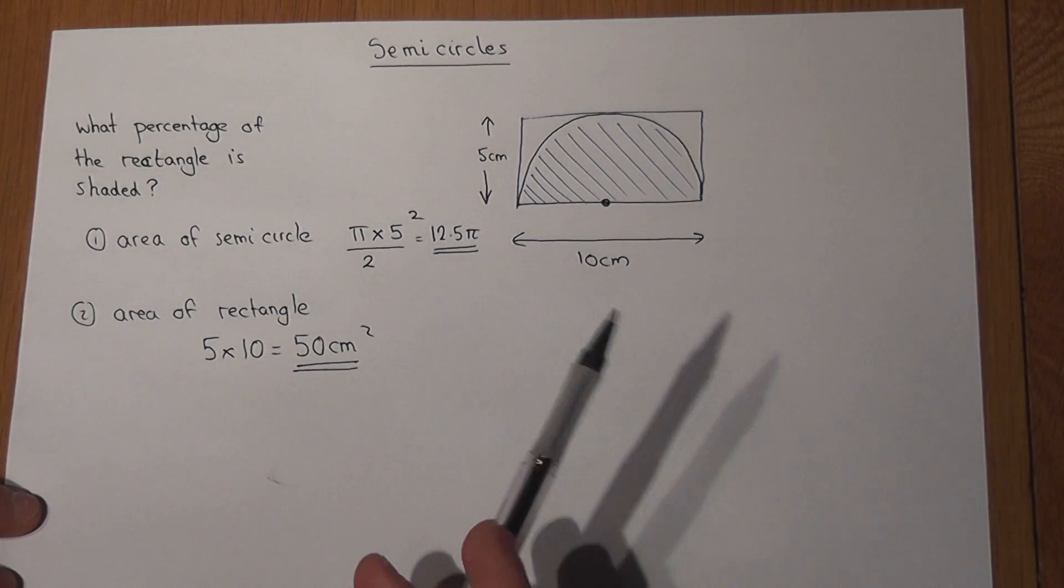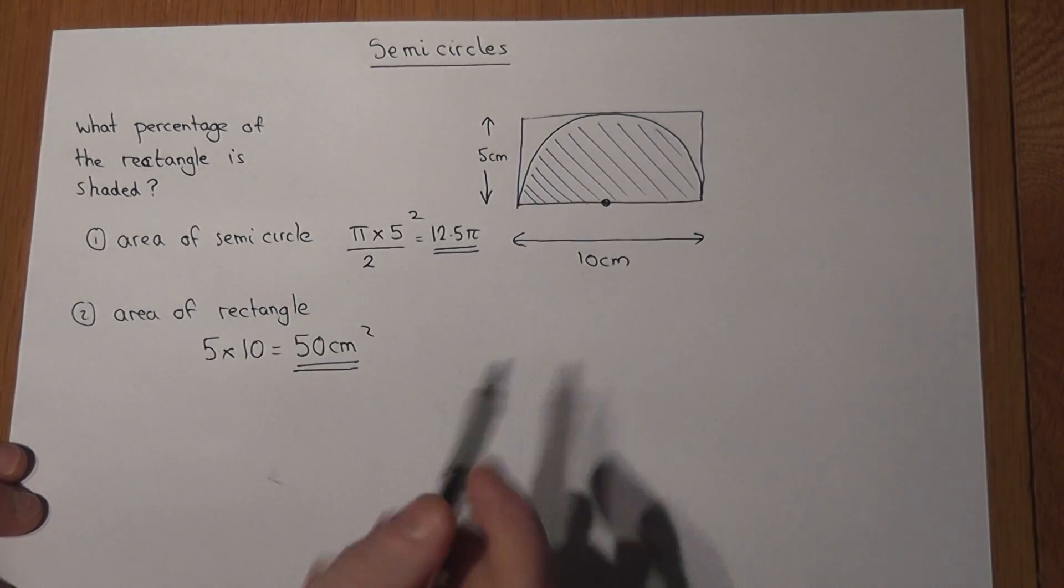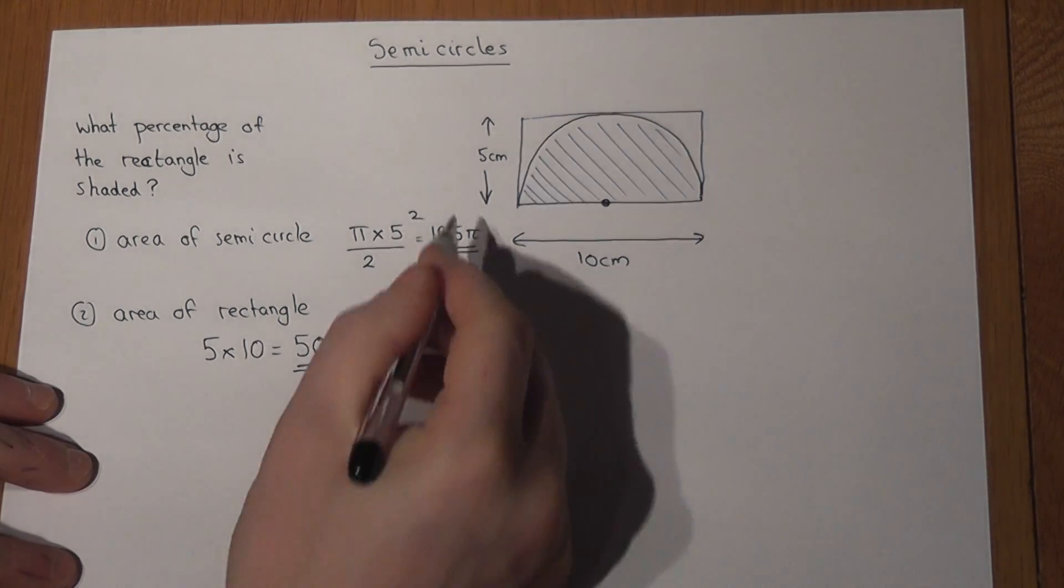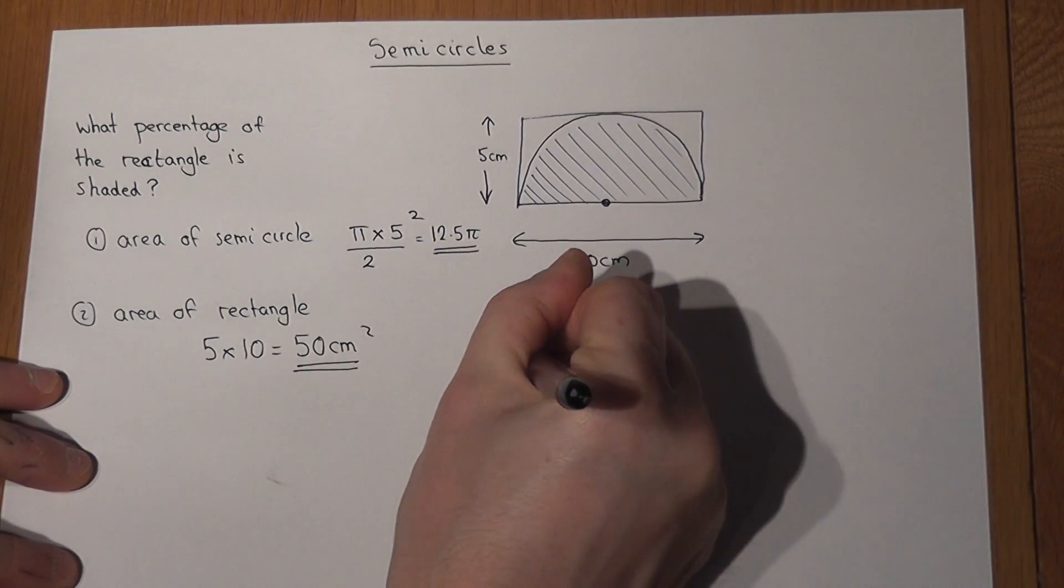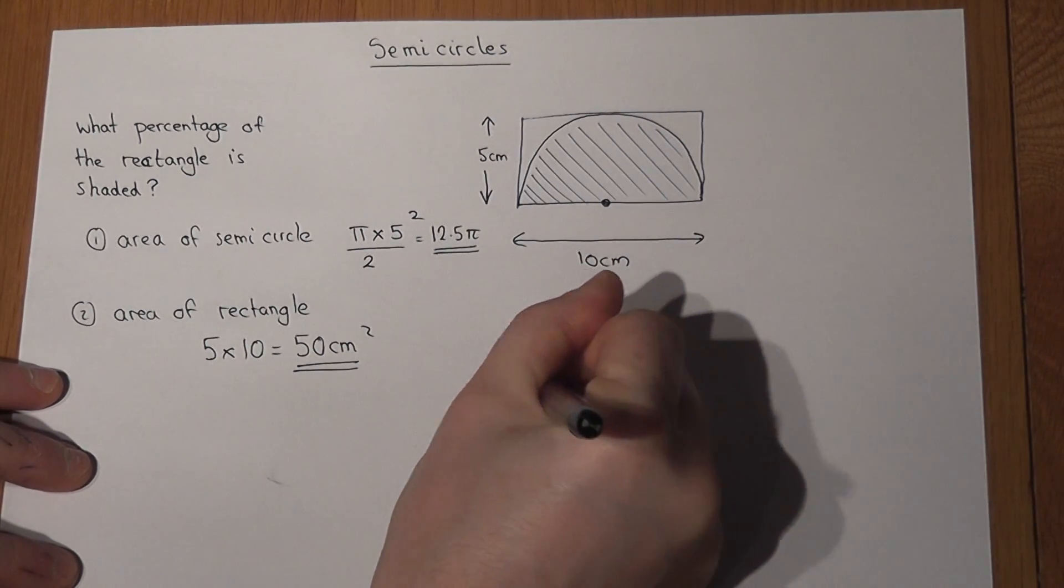Now the question says, what percentage of the rectangle is shaded? So to do this, we do the area of the semicircle divided by the area of the rectangle, and times this by 100.